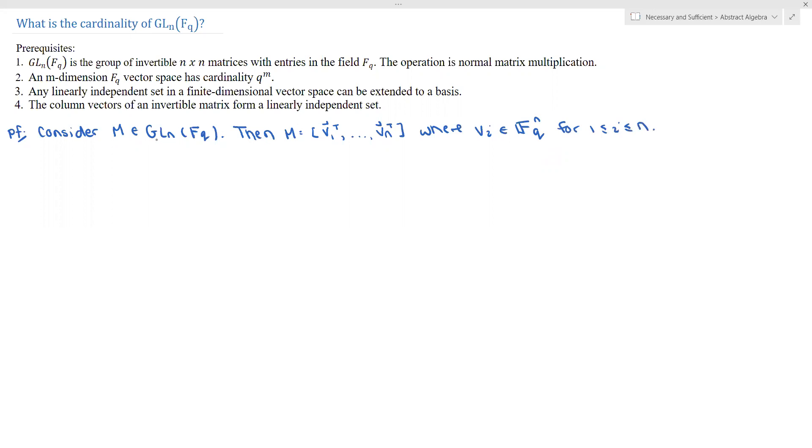So notice, because M is in our general linear group, then M by definition is invertible. So M invertible implies that if we take the vectors that form its columns, so V1 through Vn are linearly independent. And I will be abbreviating linearly independent as L.I. So on the surface, it's kind of strange. Why do we care about writing our matrix like this?